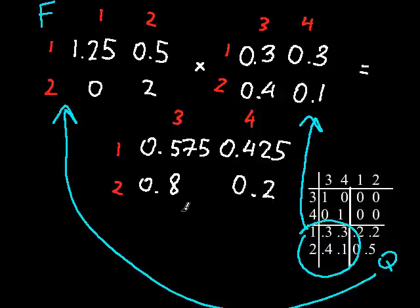Each entry in FR represents the probability of moving from a non-absorbing state in the rows to an absorbing state in the columns.